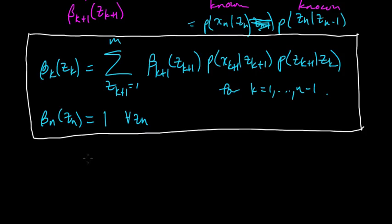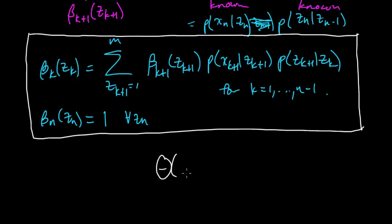For the backward algorithm, we start with beta_n, do this for all z_n, and go backwards: n minus 1, n minus 2, and so on. The computational complexity is exactly the same as the forward algorithm — these recursions take exactly the same form — so it's big Theta of n times m squared. And that is the backward algorithm.